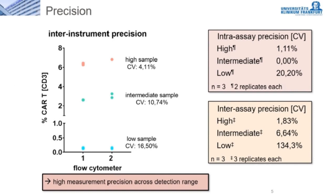We next evaluated the precision of our assay at different levels across the detection range: a high positive with about 1,300 CAR-positive events, an intermediate positive with about 580 CAR-positive events, and a low positive with about 60 CAR-positive events. Three different precision parameters were assessed: intra-assay imprecision corresponding to subsequent measurements of the same sample, intra-assay imprecision from measurements in multiple replicates, and inter-instrument comparison between a Navios and a DXFlex flow cytometer from Beckman Coulter. Imprecision ranged between 0% and 16.8% coefficient of variation, showing high measurement precision across the detection range.